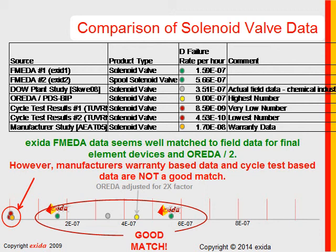We can compare mechanical parts as well as electronic. For solenoid valves, FMEDA has results for a poppet type and a spool type — FMEDA can distinguish between these two fundamentally different designs. Taking the average of those two numbers: 1.59e-7 plus 5.66e-7 divided by 2 is approximately 3.5e-7 — very close to the Dow study result. We confirmed with Dow engineers that their data includes all types of solenoid valves — poppet, spool, all designs — so taking an average brings the results very close.